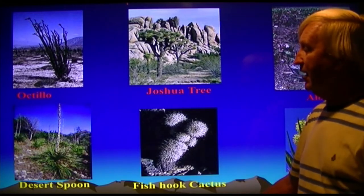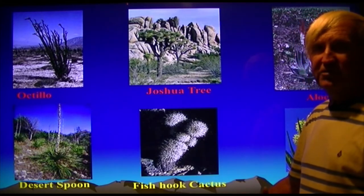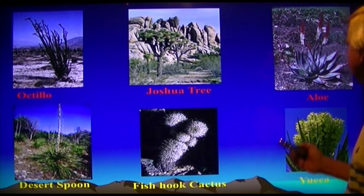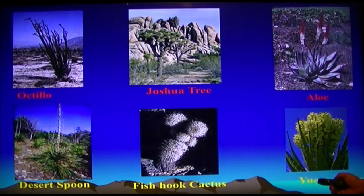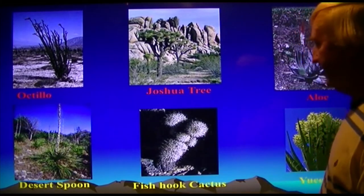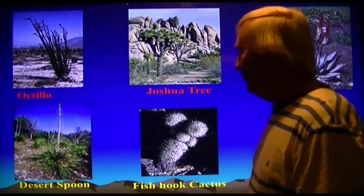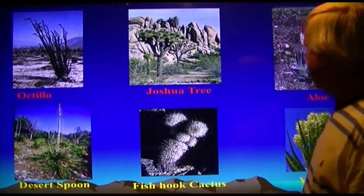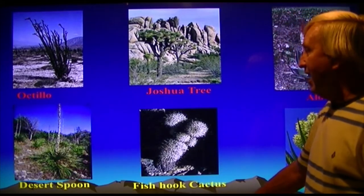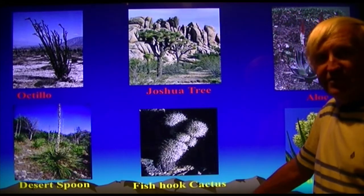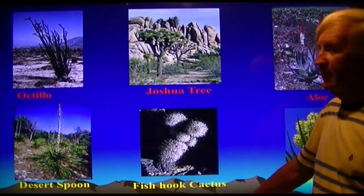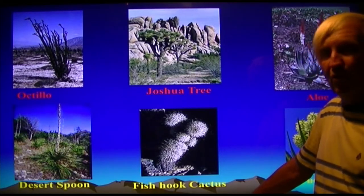Ecosystems like deserts are now burning because of introduced species — this is a system that never naturally burned. You have Joshua trees, owls, different varieties of yucca, fishhook cactus. The biodiversity of deserts is amazing. When you look at the animals and plants of the deserts, you find the desert has more biodiversity than the rainforest.